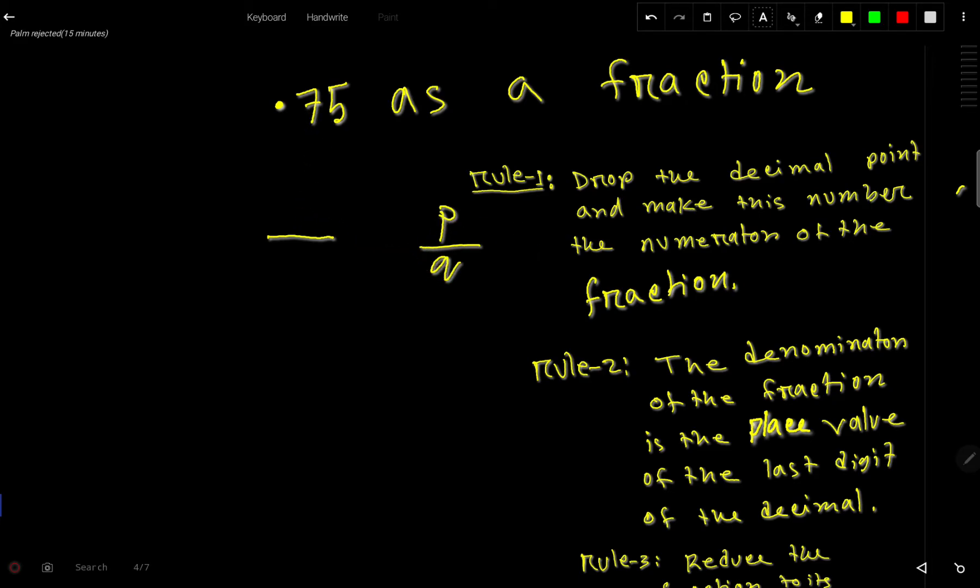For the numerator, just drop the decimal point and write the number you are getting. So if I drop this decimal point, I'll get the number 75. Now we have to determine the denominator.